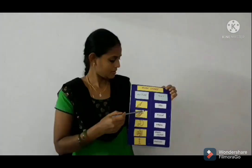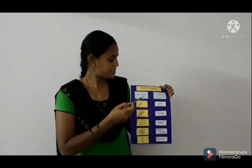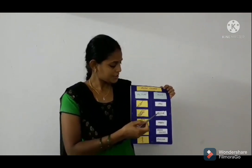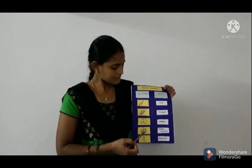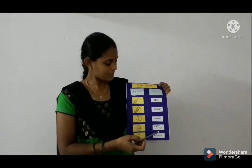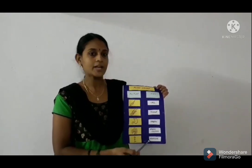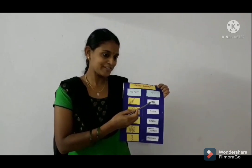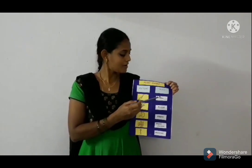All of you look at this flowchart. All cells form tissues. All tissues form organs. And organs form an organ system. And all organ systems form an organism. So every organism's life started with only one cell, because cell is the basic unit of life.